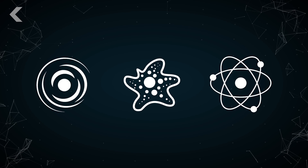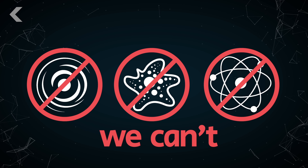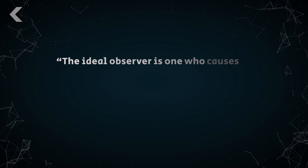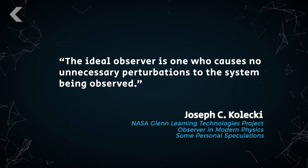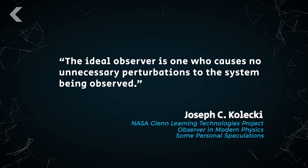This might have you wondering: how can observation be part of science if the act of observation changes the results? Can we really know what a black hole, amoeba, or atom is doing when it's alone and unobserved? We can, but NASA says on their website that the ideal observer is one who causes no unnecessary perturbations to the system being observed. Observation is a big deal, but less so if we know that there's an effect — in knowing that the observer effect exists, we can try to account for it.